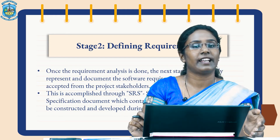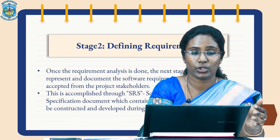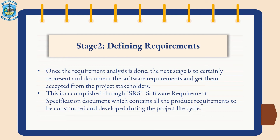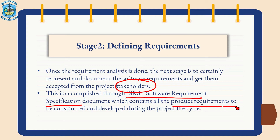Once the requirement analysis is done, the next stage is to clearly represent the project stakeholders. This is accomplished through a document called SRS, i.e., Software Requirement Specification. It is a document that contains all the product requirements to be constructed and developed during the project lifecycle.